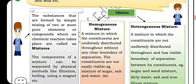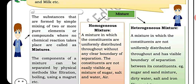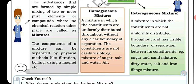Let us look at the types of mixtures. Mixtures are made up of two or more substances, and these can be separated easily by physical methods. Mixtures are of two types: homogeneous mixtures and heterogeneous mixtures.